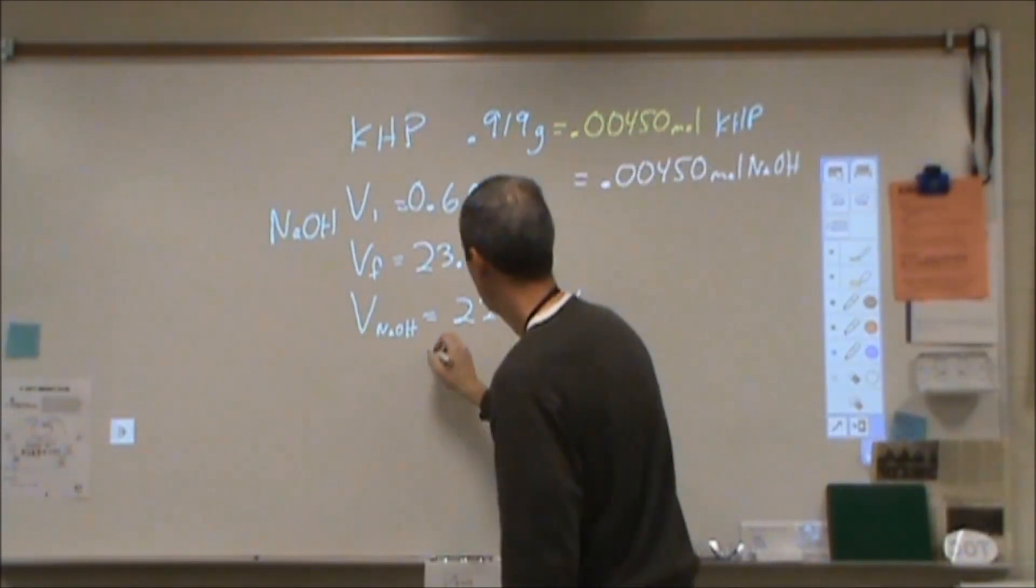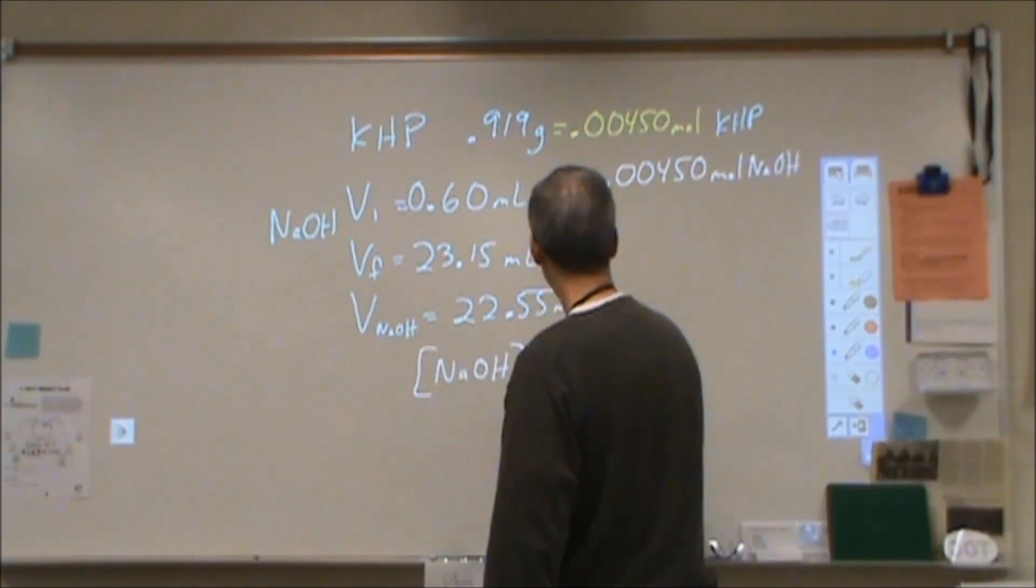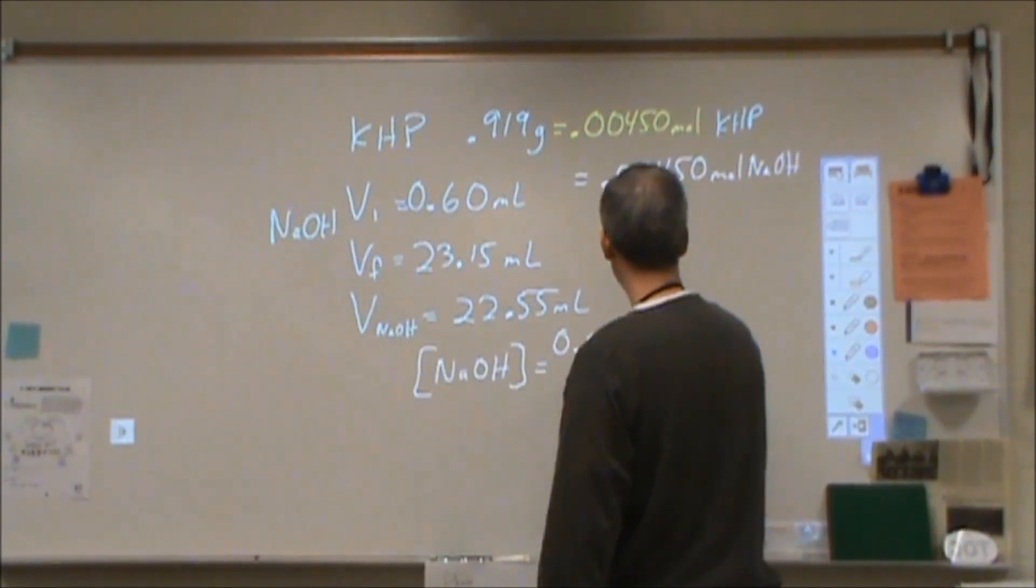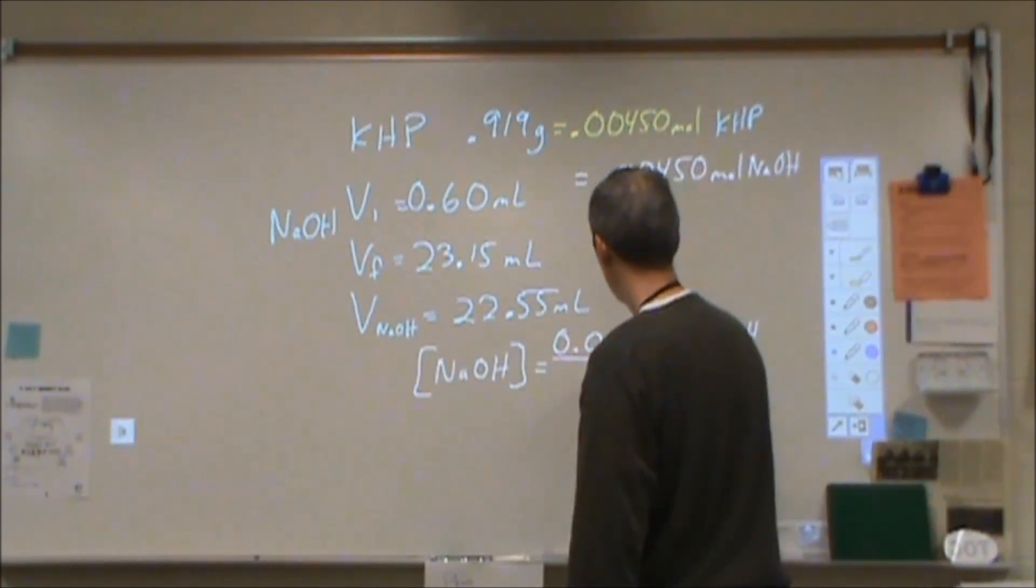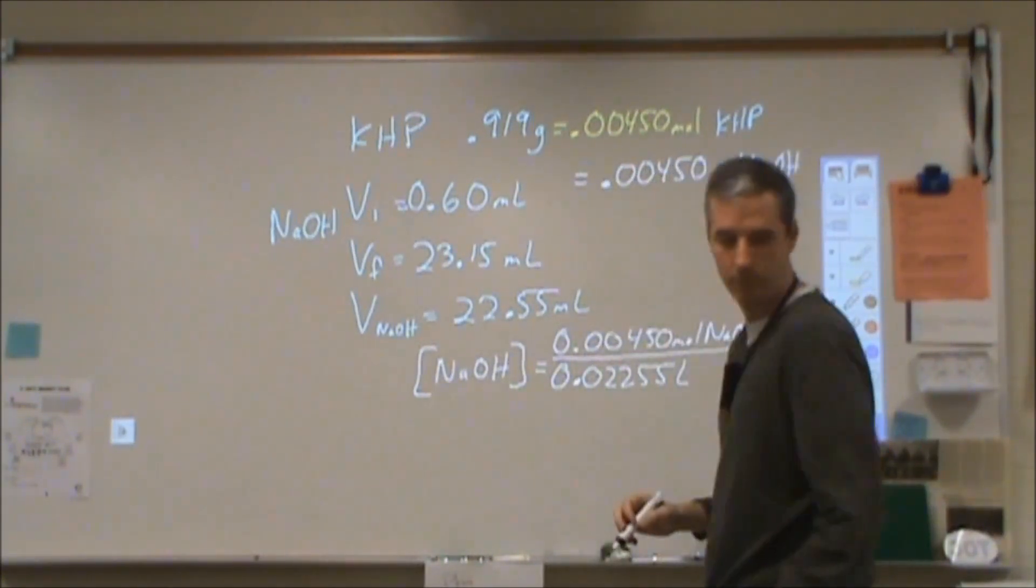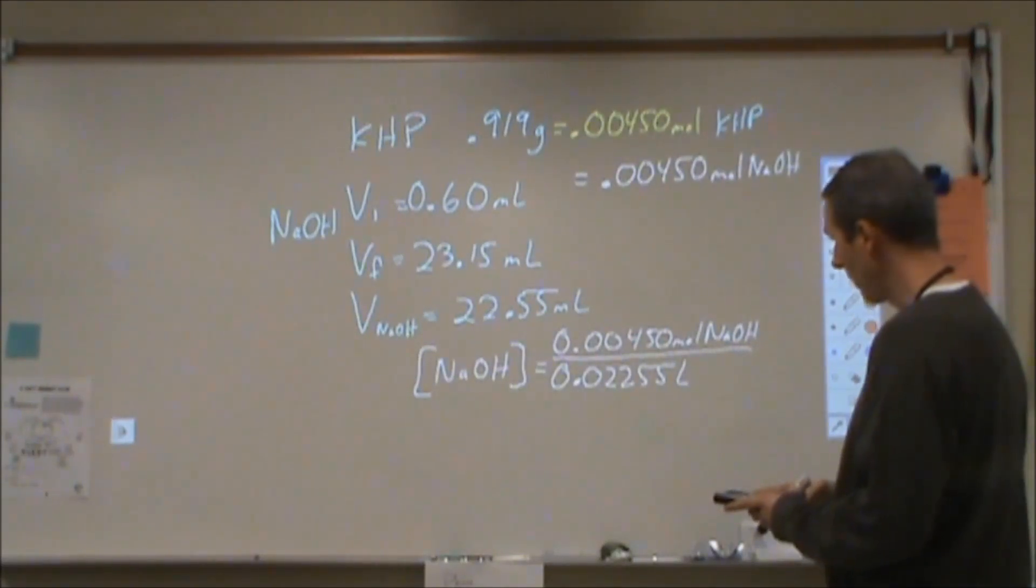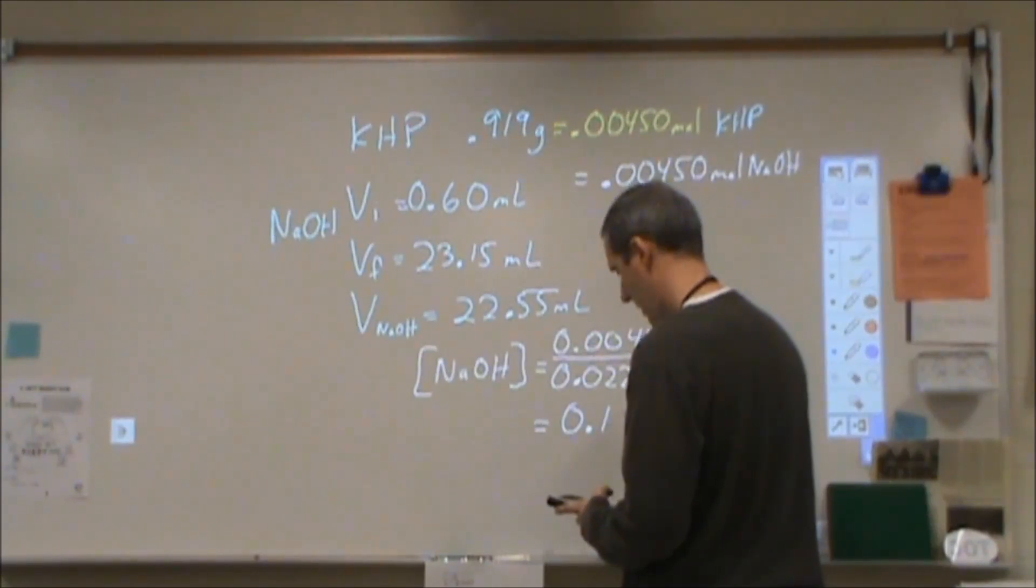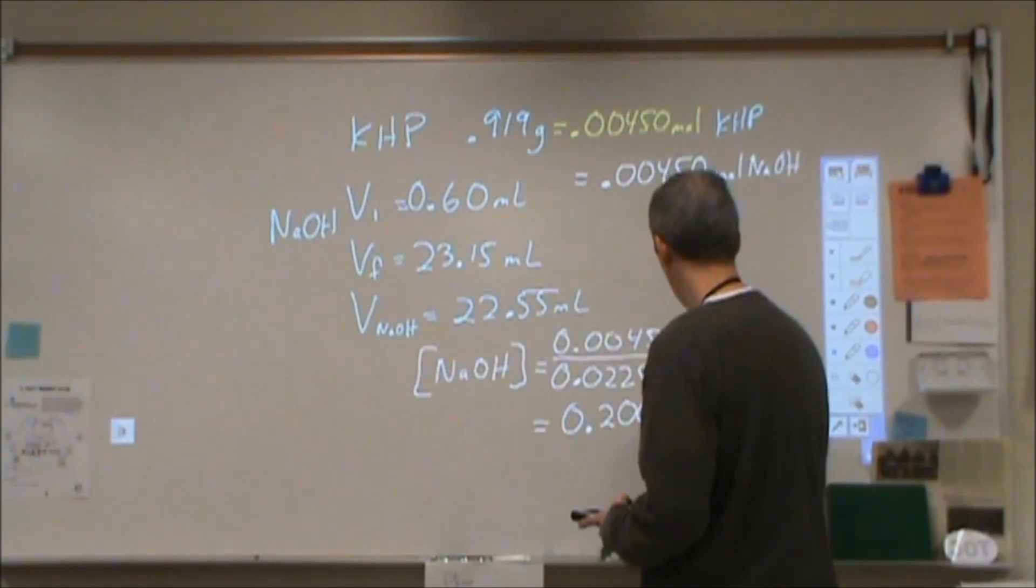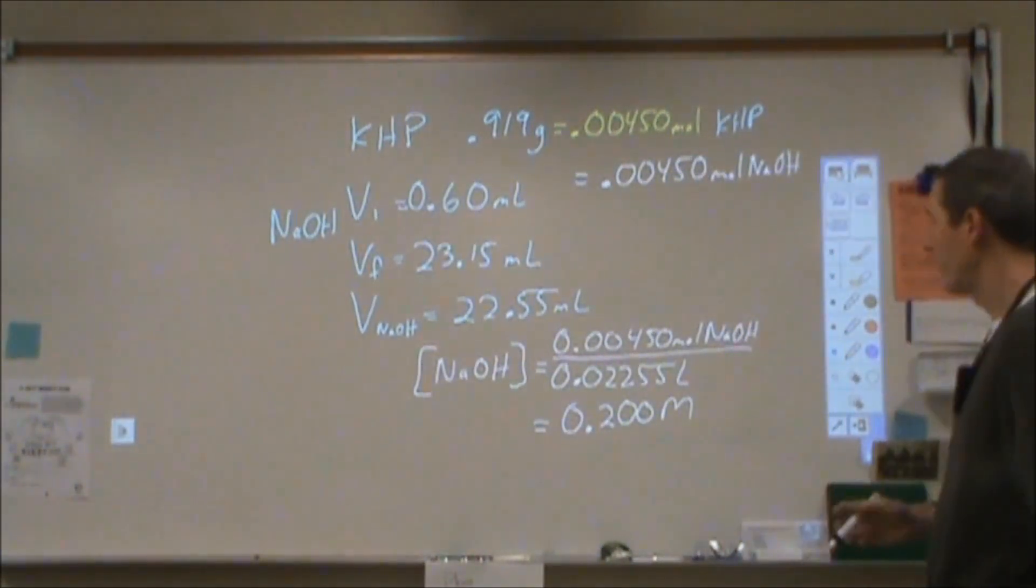So to find the concentration of that sodium hydroxide, all I would need to do is take this 0.00450 moles of NaOH divided by 0.02255 liters and plug that into a calculator. That's looking very, very close to 0.2 molar. That's slightly off. And now we have this is 0.199, no, 0.2. Hey, look at that. 0.200 moles. So that's unlikely. But we'll see how that repeats with other data.